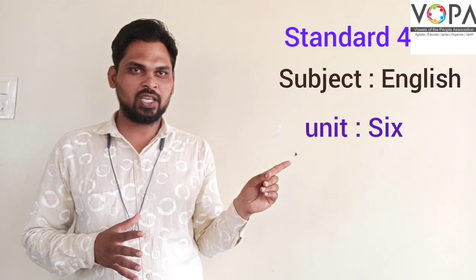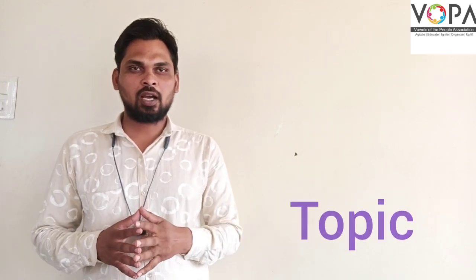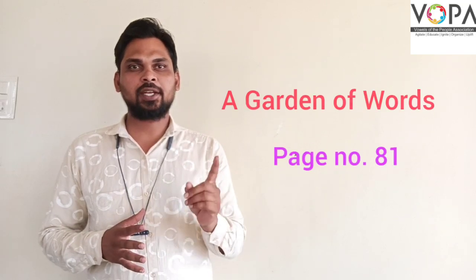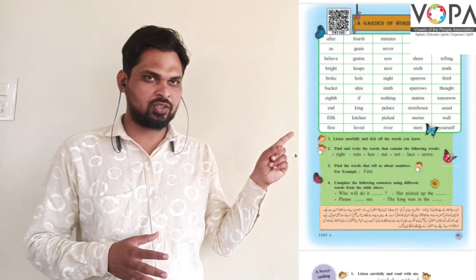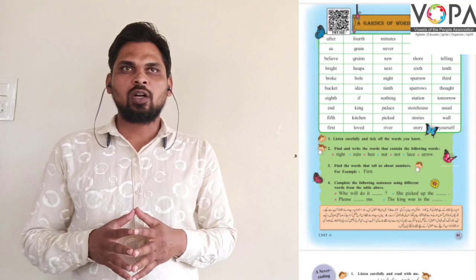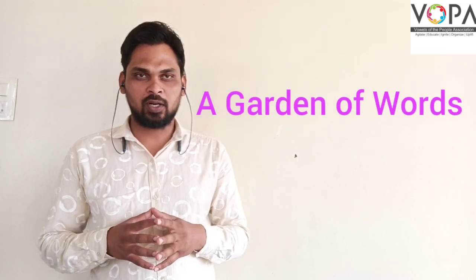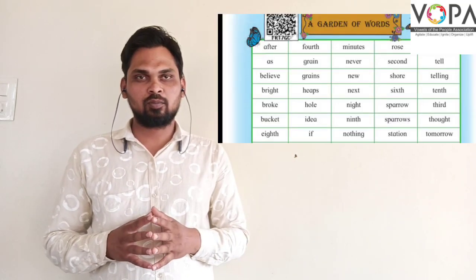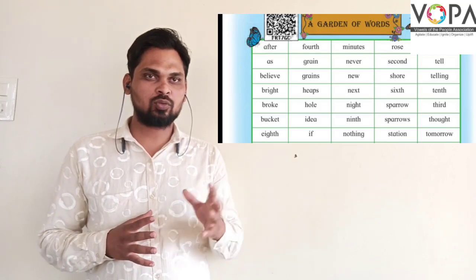Hello dear student, today we are going to learn about Standard 4, subject English, Unit 6, topic name is 'A Garden of Words', page number 81. This is your textbook page, page number 81. What we will do first? We will read the table, 'A Garden of Words'. प्यारे बच्चों, सबसे पहले सबक में मौजूद इस टेबल का हम मुताला करेंगे, इस टेबल में मौजूद अलफाज़ को हम पहले पढ़ लेते हैं।